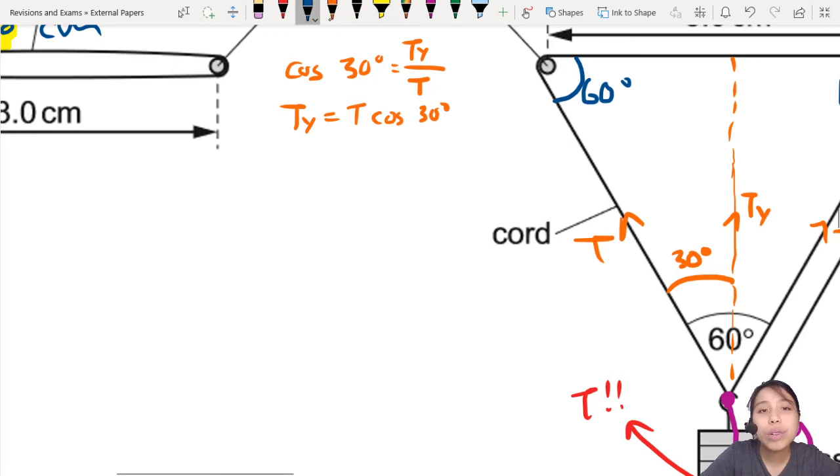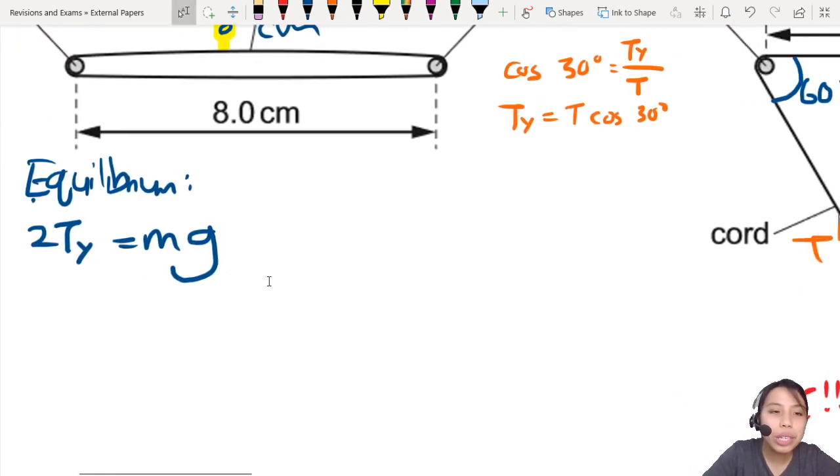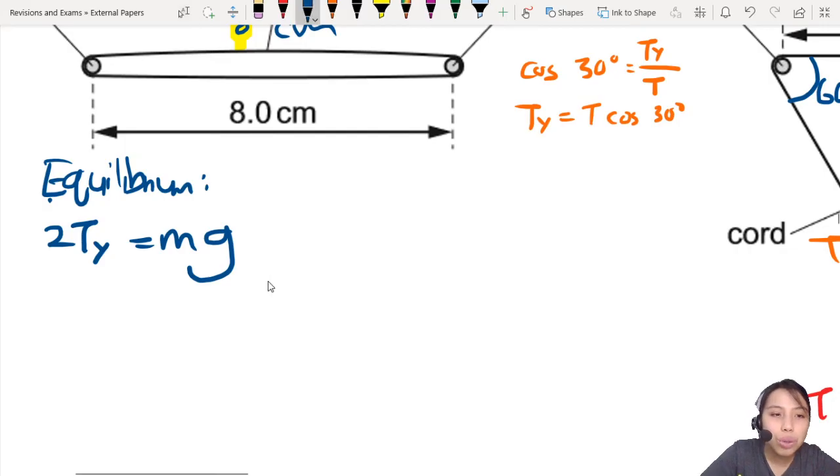Very nice. So let's plug this into our equation to get an expression for T. So 2 times T·cos 30 will be mg.